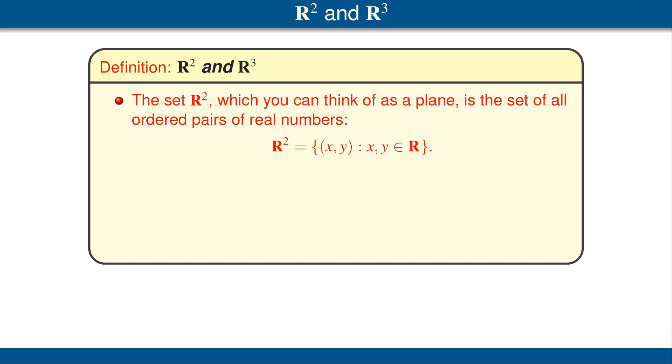As motivation for defining R^n and C^n, which appear in the title of this section, we first consider two familiar special cases. Let's begin with the set R², which is a set of all ordered pairs of real numbers. As you know, we can think of R² as a plane.